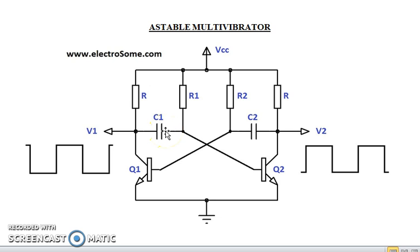When the capacitor charges to voltage sufficiently, it provides 0.7 volts to the base of the Q2 transistor. Immediately, the transistor Q2 turns on and the capacitor C2 discharges in this direction.